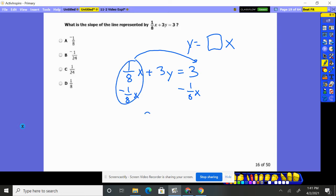It gets rid of it here, leaves me 3Y. I'll put this negative 1/8 X up front because we want it up front, plus 3.